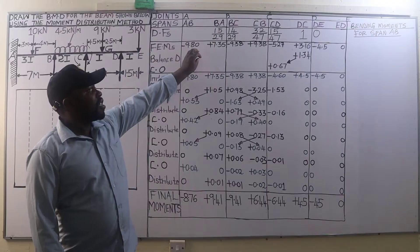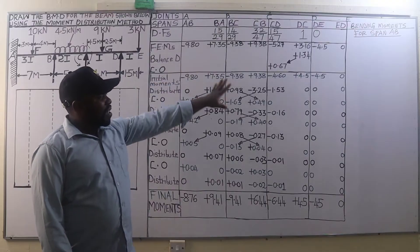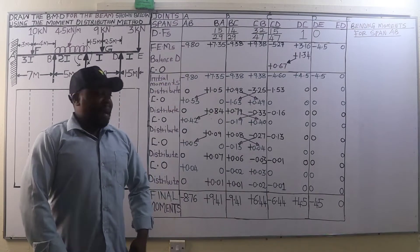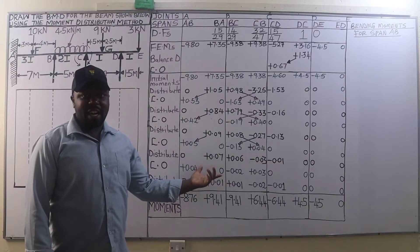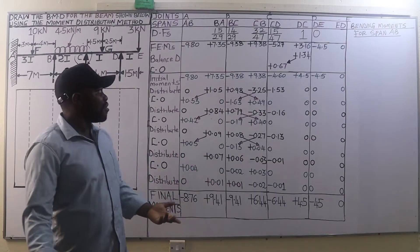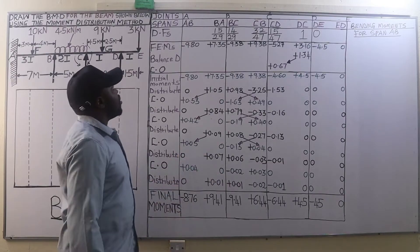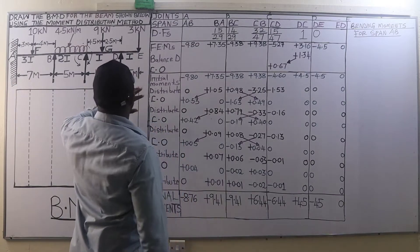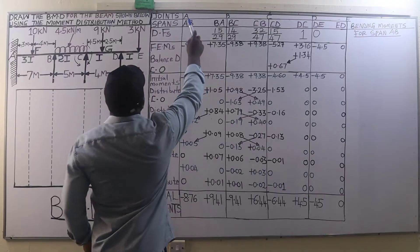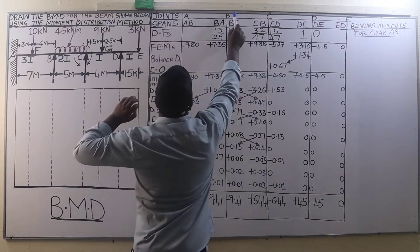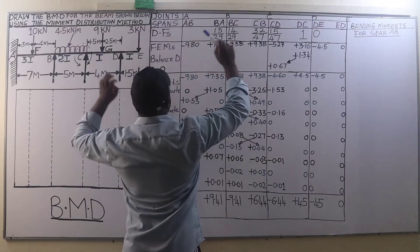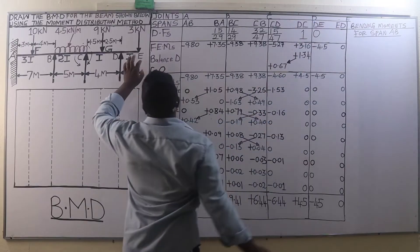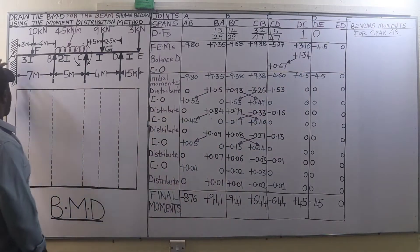This is what our distribution table is going to look like. I have already drawn and filled it, but I'll explain what has been done and what you are expected to do. On our beam we have five joints in total: joint A, joint B, joint C, joint D, as well as joint E.